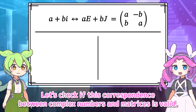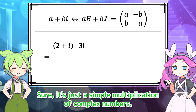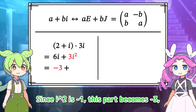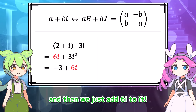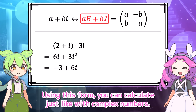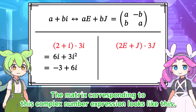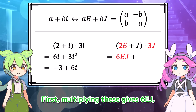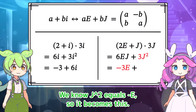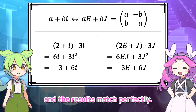Let's check if this correspondence between complex numbers and matrices is valid. Try calculating 3I times 2I. It's just simple multiplication of complex numbers. Multiplying gives 6I, and multiplying these gives 3I squared. Since I squared is negative 1, this part becomes negative 3, and then we add 6I. Now let's calculate the corresponding matrix. Using this form, you can calculate just like with complex numbers. The matrix corresponding to this expression gives 6EJ. And multiplying gives 3J squared. Since J squared equals negative E, just like with complex numbers, the corresponding matrix calculation works, and the results match perfectly.